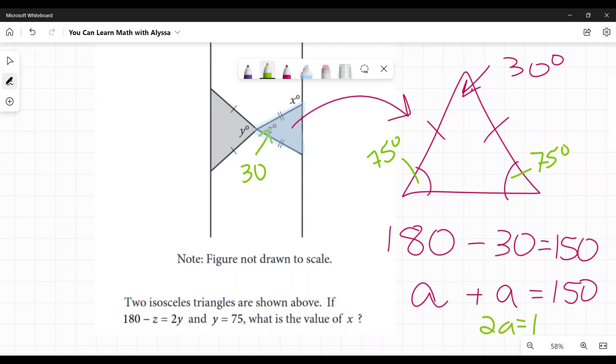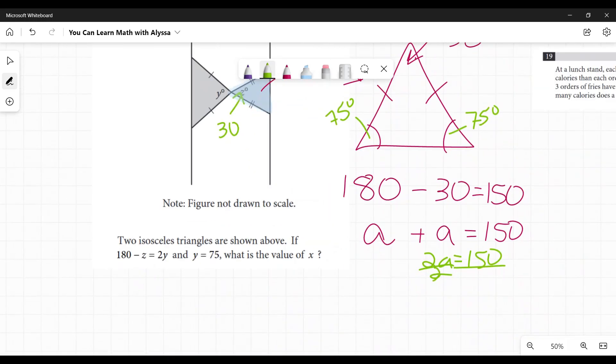If you want to see that written out, two a equals 150. And you divide both sides. I'm running out of room. Divide both sides by two, a equals 75. There it is written out.